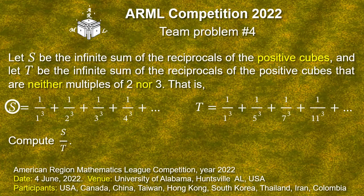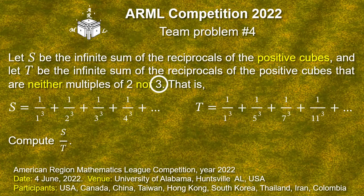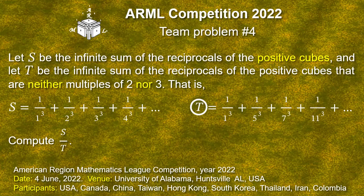So S is the sum of inverse cubes of all positive integers. Then we leave only the terms corresponding to the numbers which are divisible neither by 2 nor by 3 and get the new sum denoted by letter T. It is required to compute the ratio S over T.